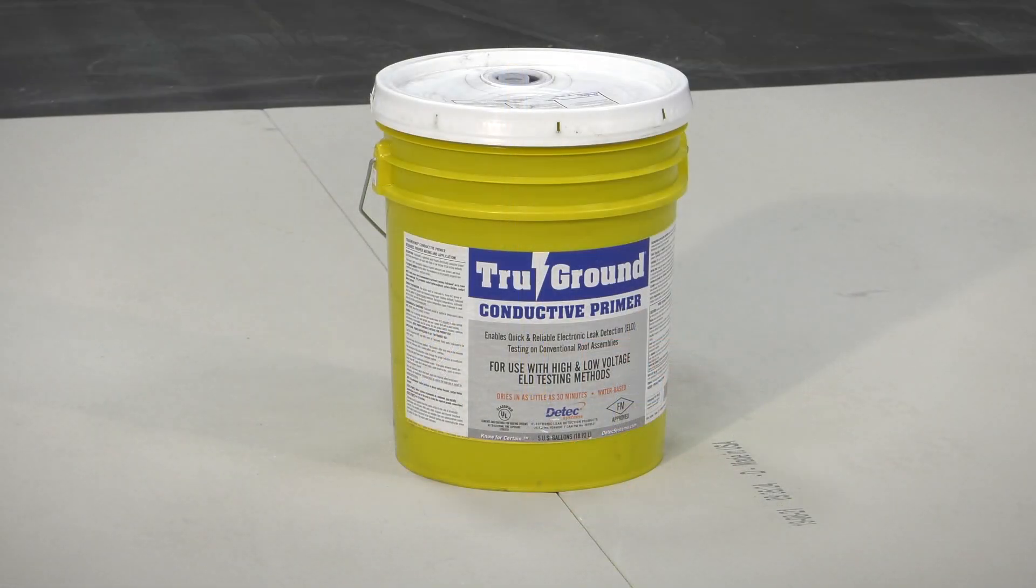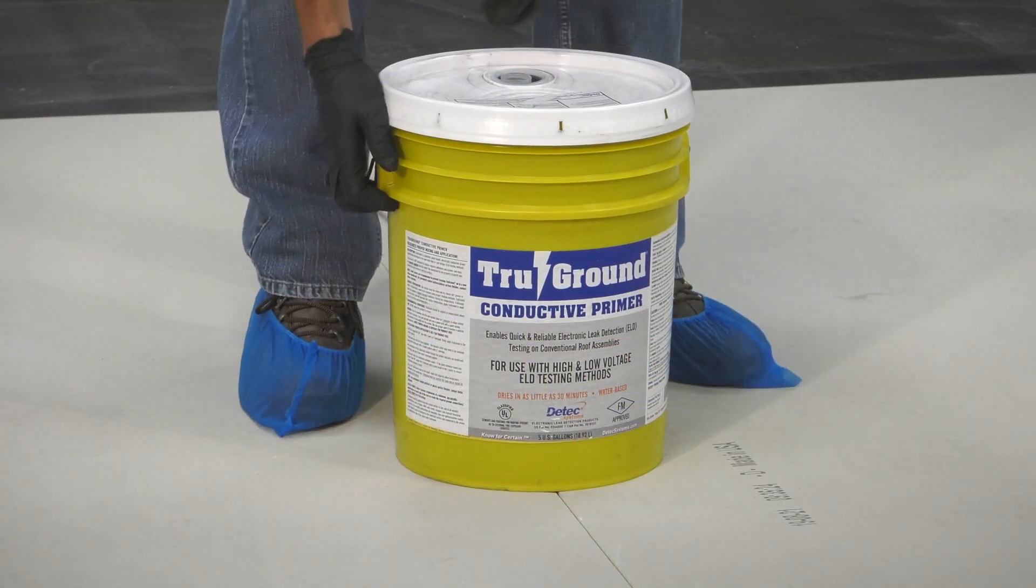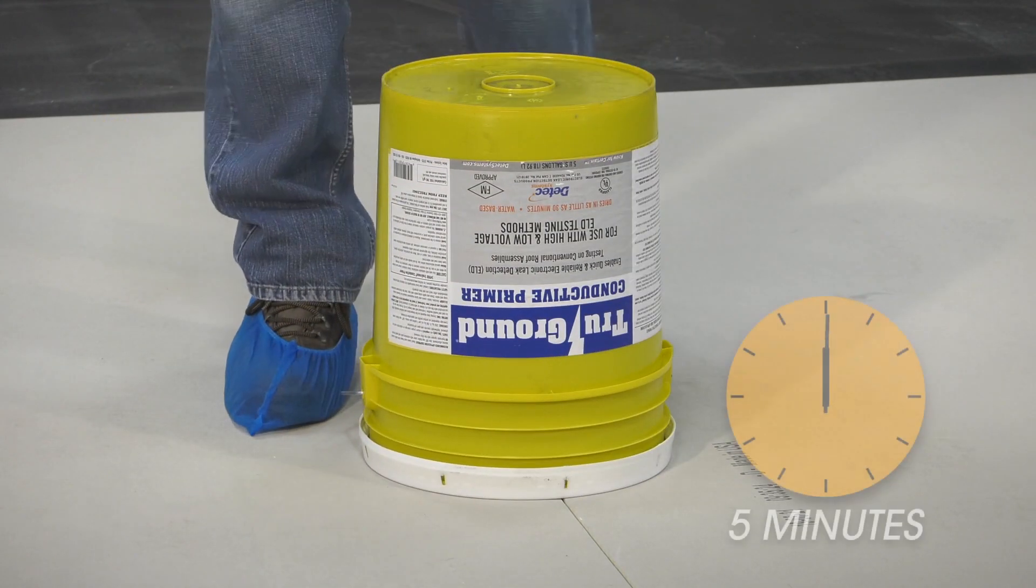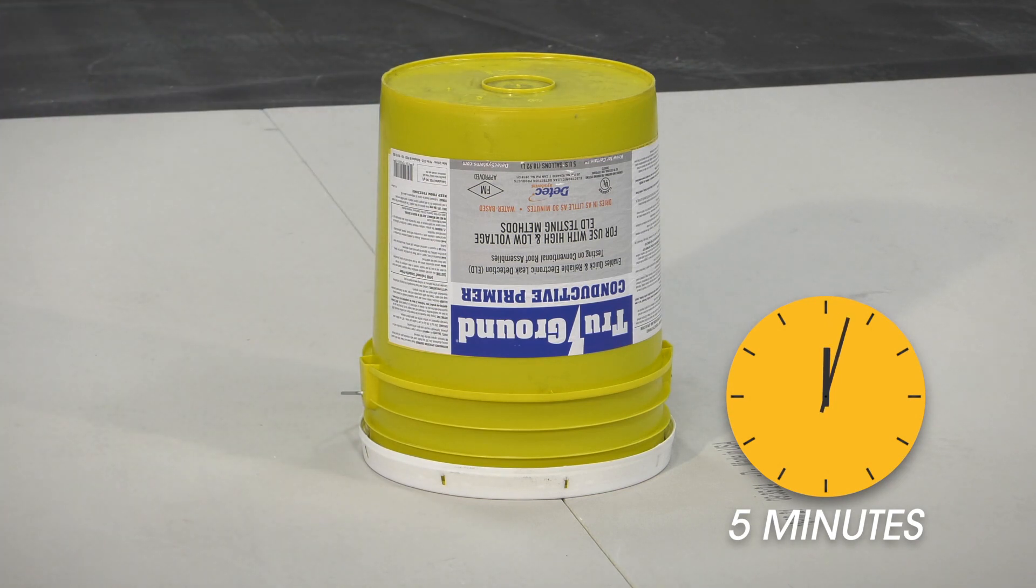Prior to True Ground application, each pail must be properly mixed. To start, flip each pail upside down for approximately 5 minutes. This allows any settled material to loosen.